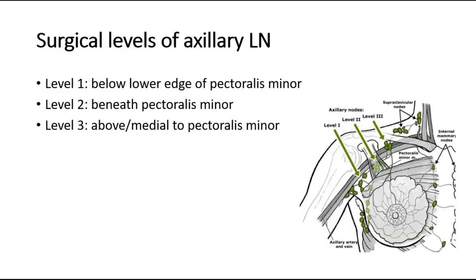We may also be asked on the surgical levels of the axillary lymph nodes. Generally there are three levels. Level 1 is below the lower edge of the pectoralis minor. Level 2 is directly beneath the pectoralis minor, and Level 3 is above or medial to the pectoralis minor muscle. You can see in this picture the pectoralis minor muscle with Level 1, Level 2, and Level 3 axillary lymph nodes labelled.